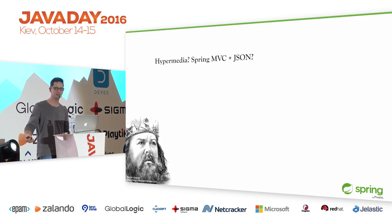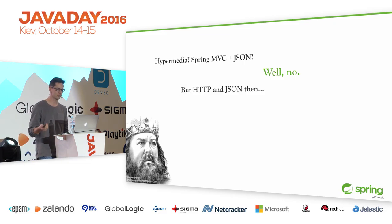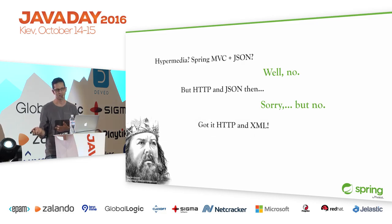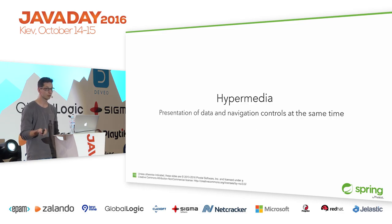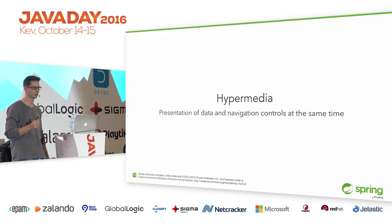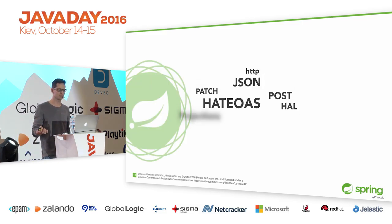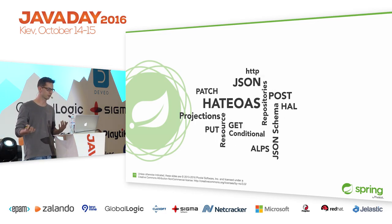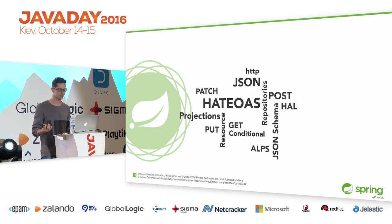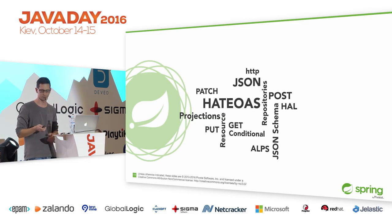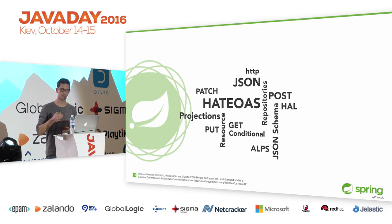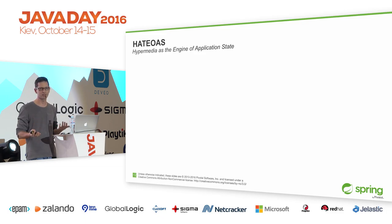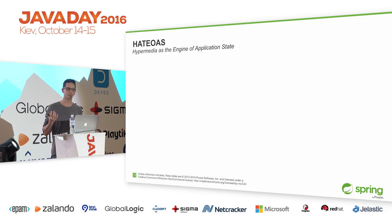How does hypermedia play a role in all of this? What is hypermedia? Is it just taking any application, adding Spring MVC, and exposing what you have as JSON? No — it's not plain HTTP and JSON, and not HTTP and XML either. What hypermedia actually is: it's the presentation of data and navigation controls at the same time, using a common format that allows us to use HTTP verbs to interact with the server. At the center of all this is the HATEOAS principle.